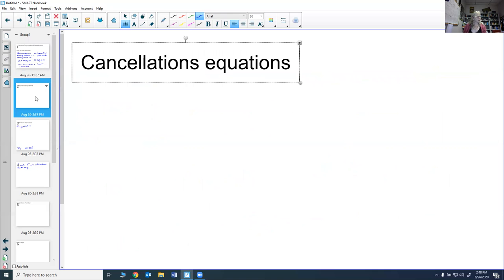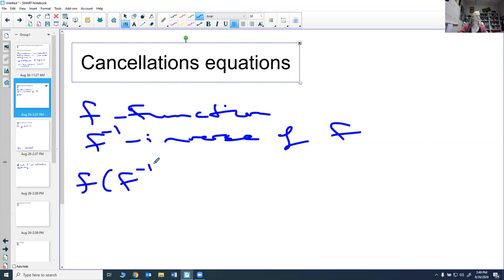Once we have that, we can talk about what we call the cancellation equations. These equations allow you to take a function and its inverse and compose them. So if f is a function and f inverse is the inverse function, then if I took f and I composed it with f inverse, I would get back what I started with. So I started with x, I ran it through the inverse and then ran it back through the function, I would get x back. And this is for all x in the domain.